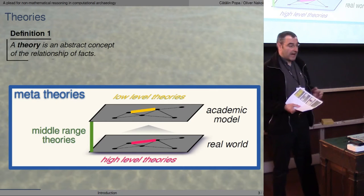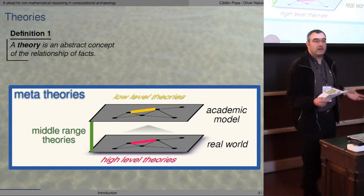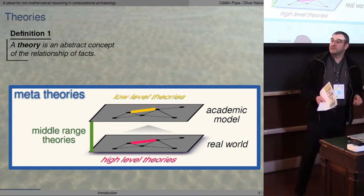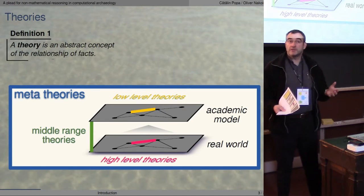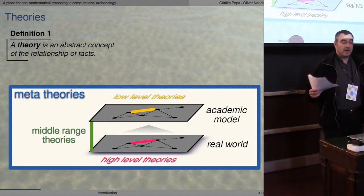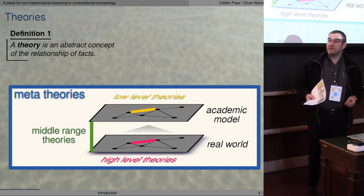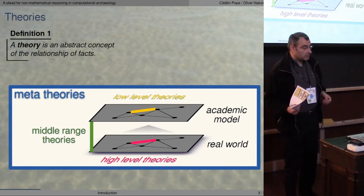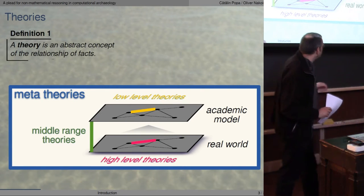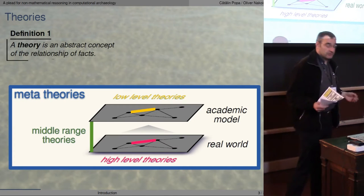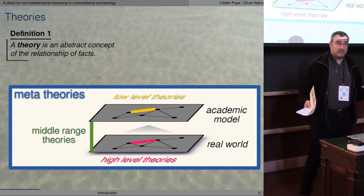We have high-level theories which deal with elements in the real world. We have low-level theories which deal with elements in our academic models. We have middle-range theories which make the connection between those two levels. And we have meta-theories which tell us how the whole concept of research works. At the moment I am speaking about meta-theories.